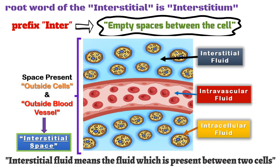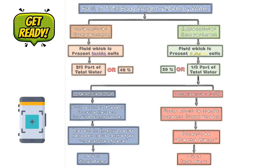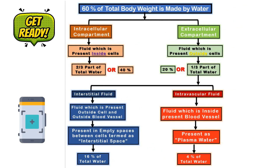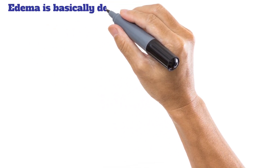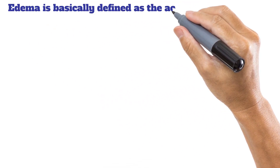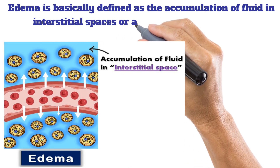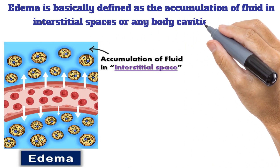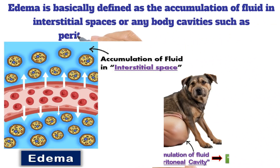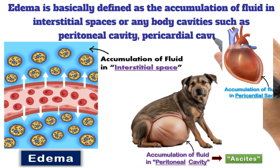Be ready to take a screenshot of the chart I've prepared for the entire water distribution in the living body. As mentioned earlier, edema is basically defined as the accumulation of fluid in interstitial spaces or any body cavities such as the peritoneal cavity or pericardial cavity.